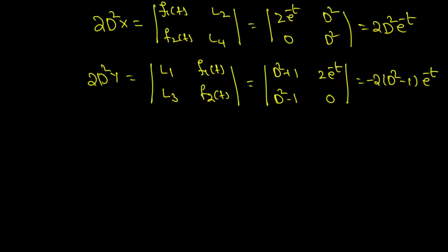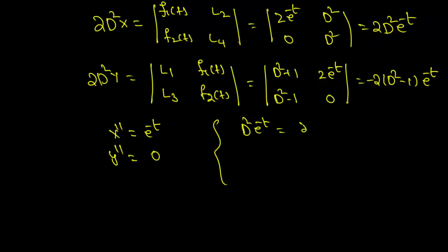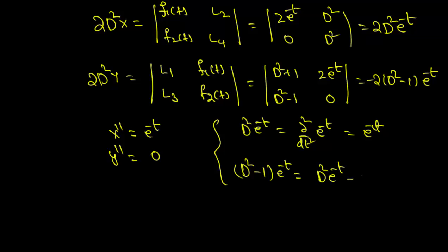Therefore the two equations are: x'' = e^(−t), since d²/dt²(e^(−t)) = e^(−t), and (D² − 1)·e^(−t) = D²·e^(−t) − e^(−t) = e^(−t) − e^(−t) = 0, so y'' = 0.